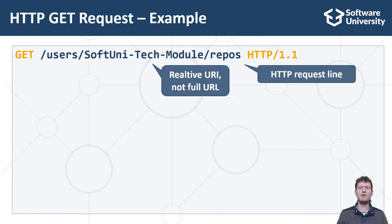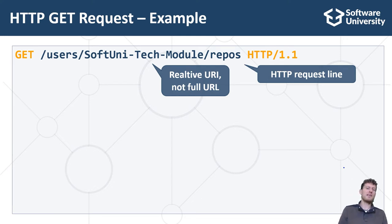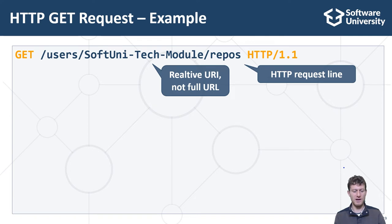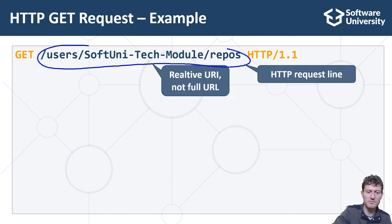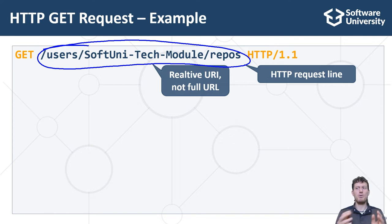In most computer systems the new line consists of two characters: CR (carriage return, ASCII code 13) and LF (line feed, ASCII code 10) — this is the new line format used in the HTTP protocol. Web browsers use URLs but HTTP uses URIs to address resources. URL stands for Uniform Resource Locator and describes the full unique address for a resource on the internet, consisting of protocol + host + resource path. URI stands for Uniform Resource Identifier and holds a full or relative unique path to a resource, for example /about.